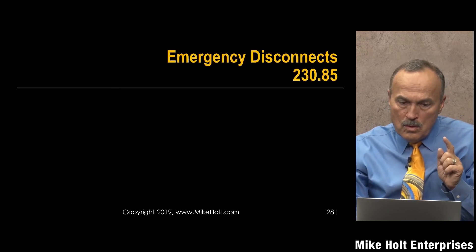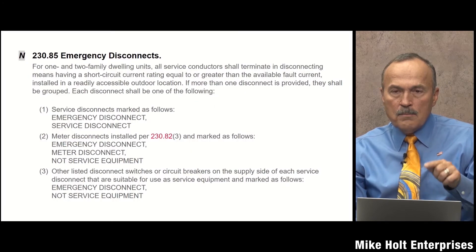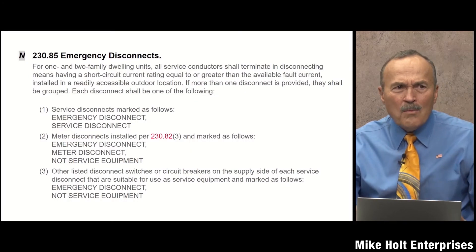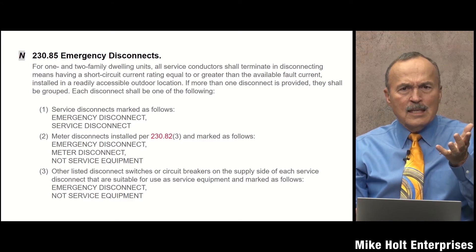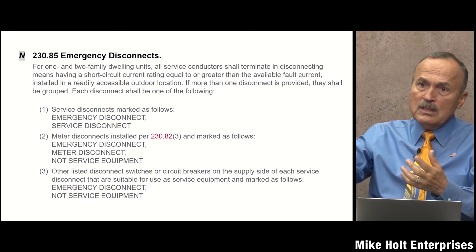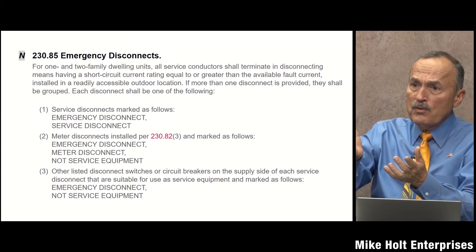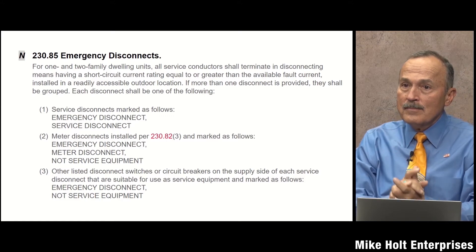So you have a meter outside, a disconnect inside, and you're putting another disconnect ahead of the service disconnect — 230.82 permits a disconnect ahead of the service disconnect. Why would you do that? Why would you have a meter, go to an emergency disconnect ahead of the service disconnect, where the emergency disconnect has to be rated for service equipment and has overcurrent protection? Well, think of a service changeout — you don't have to replace the conductors going into the home.